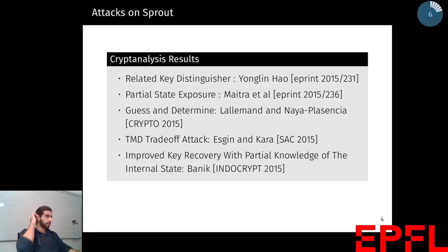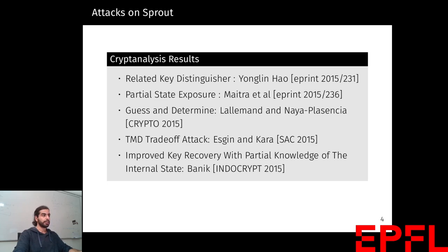Now we can talk about some of the cryptanalysis results in Sprout. In 2015, the same year that Sprout was proposed, a related key distinguisher was proposed by Junglin Hall. Later on, Maitre et al. proposed a partial state exposure attack, again in the same year. In Crypto 2015, a guess-and-determine attack was proposed by Lehmann and Plazintia. Later in SAC 2015, a time-memory trade-off attack was proposed by Eski and Ankara. And in Indocrypt 2015, Banik presented a work called Improved Key Recovery with Partial Knowledge of the Internal State.